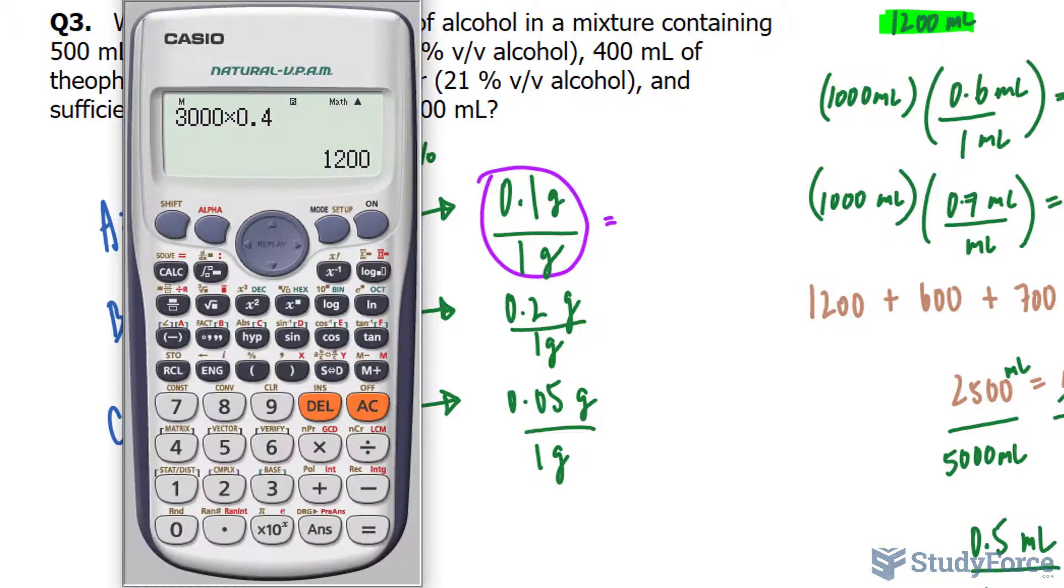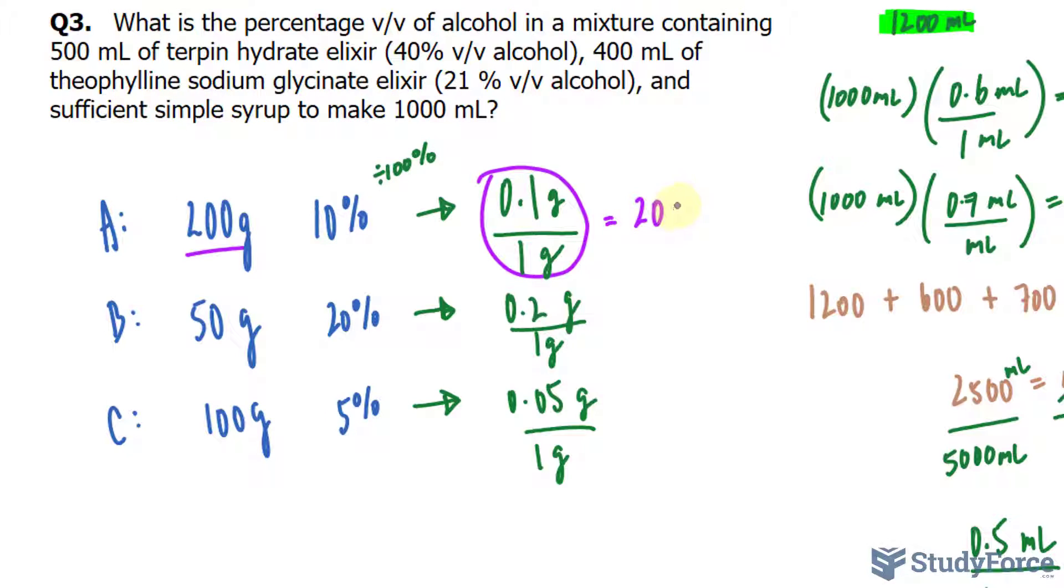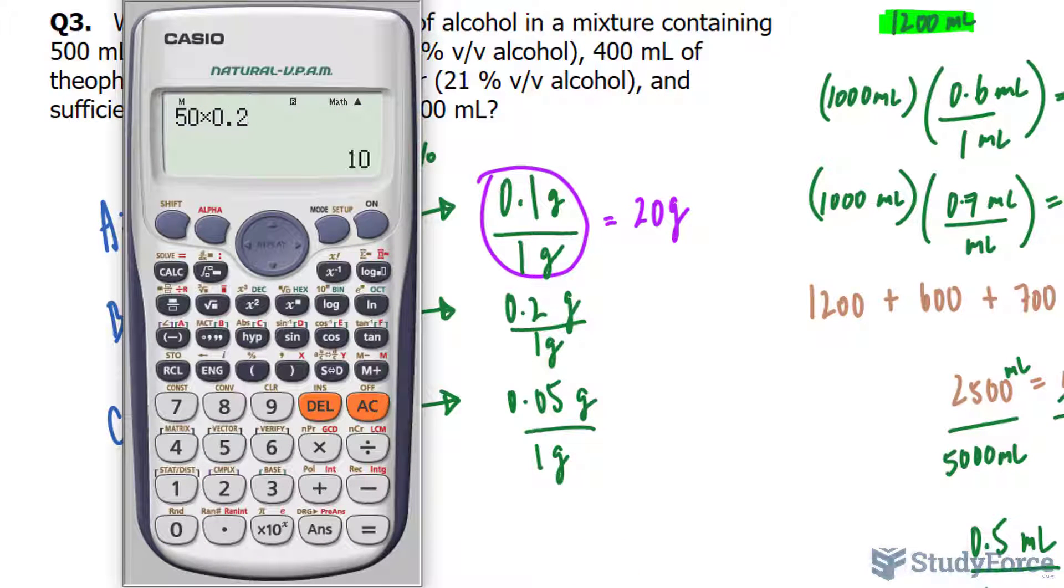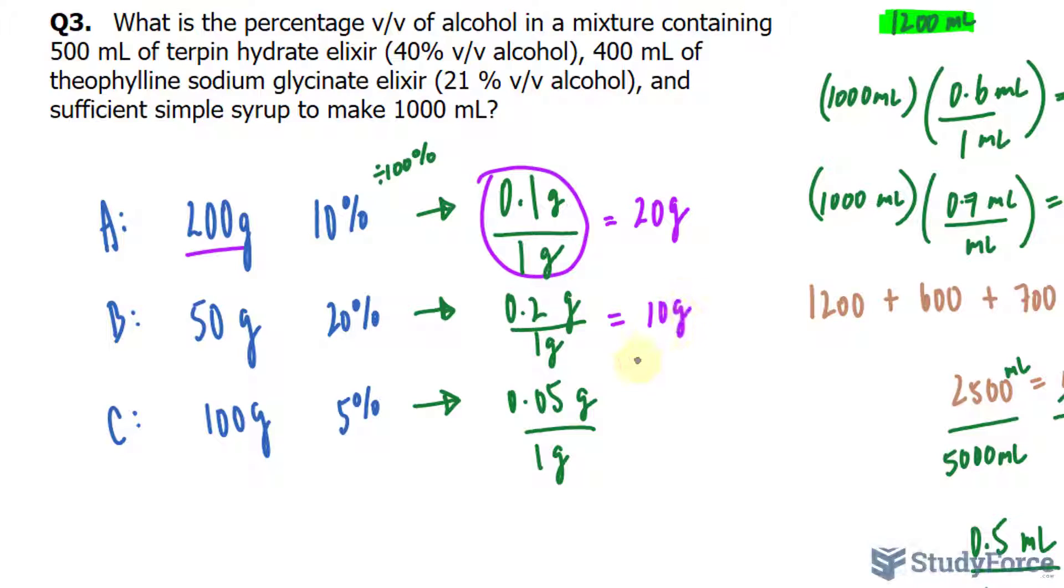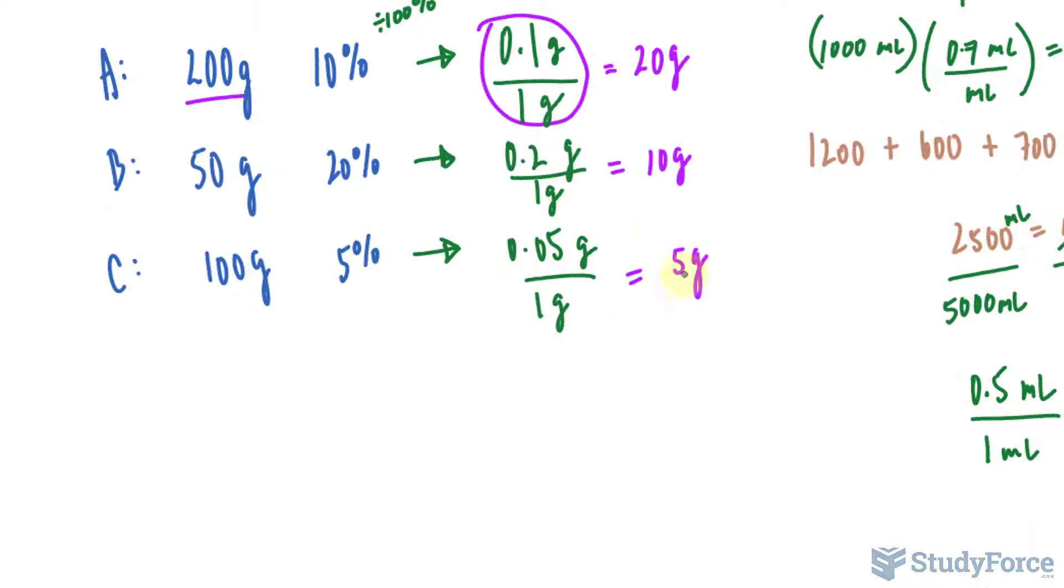So let me show you what I mean. If I multiply 200 times 0.1, you get 20 grams of active ingredient within only the 200 gram part. And similarly taking 50 and multiplying it by 0.2, there are 10 grams of zinc oxide within that 50 gram part of the mixture. And 100 times 0.05 is 5 grams of zinc oxide per that 100 part of the mixture. So these are the active ingredients of each of the parts. And like I said, you will add these up.